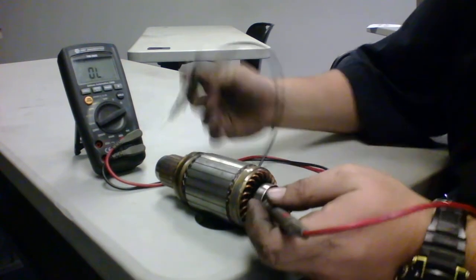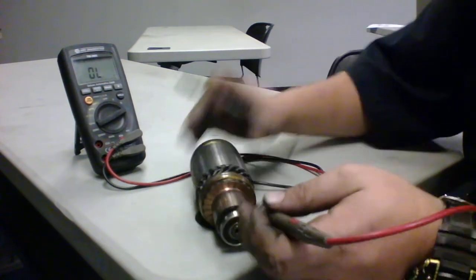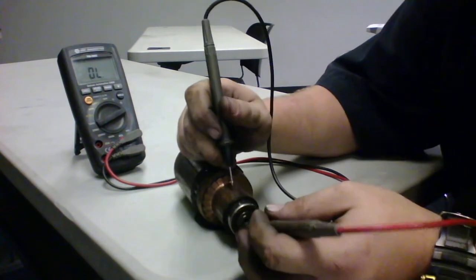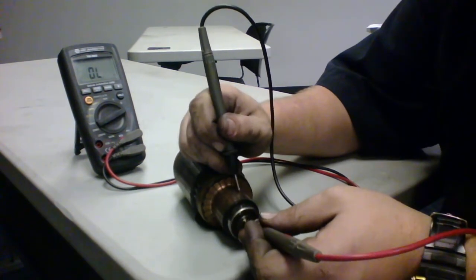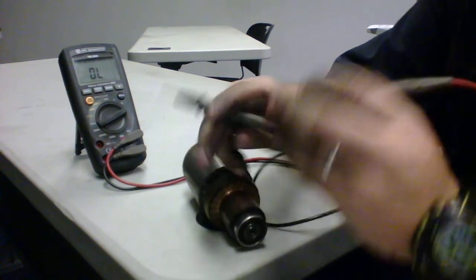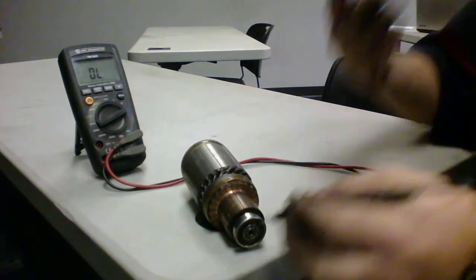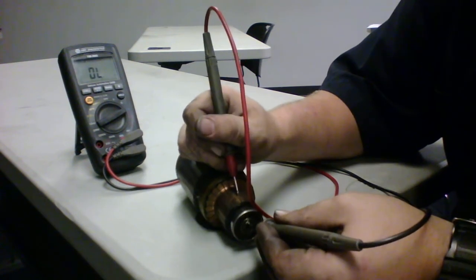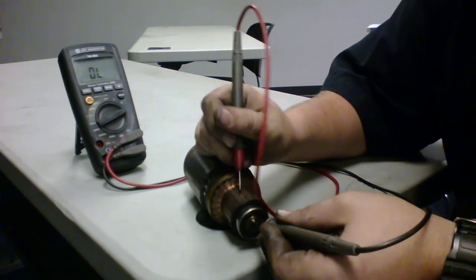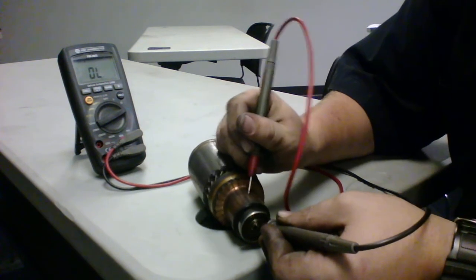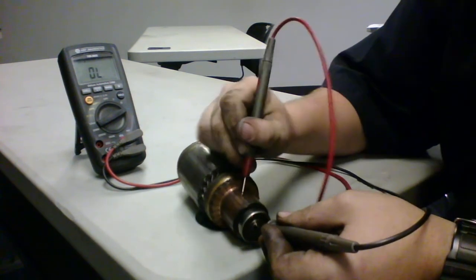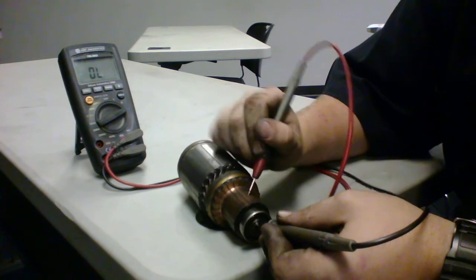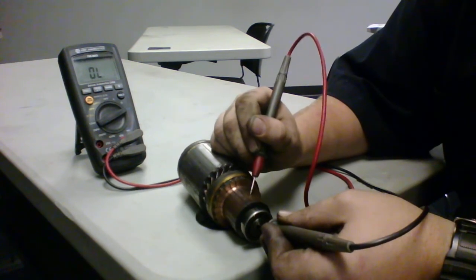Now we're going to run from the armature to the pole, the ground, and make sure we have our leads leading in the right direction. And as we can tell, we should have nothing here. There should be no connection in between armature and pole.